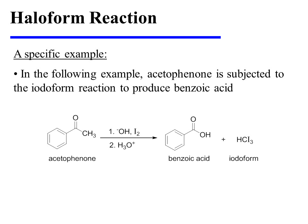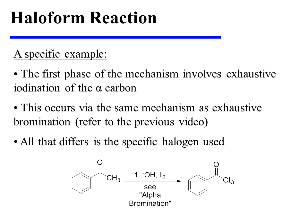In the following specific example, acetophenone is subjected to the iodoform reaction to produce benzoic acid. The first phase of the mechanism involves exhaustive iodination of the alpha-carbon. This occurs via the same mechanism as exhaustive bromination, which we saw in the previous video on alpha-bromination. All that differs here is the specific halogen used.